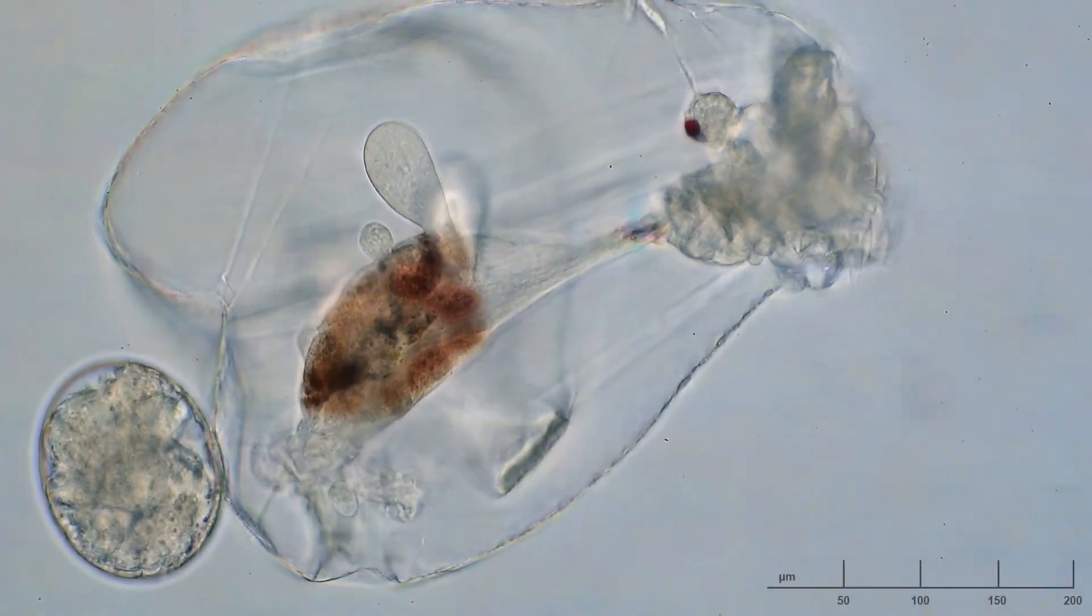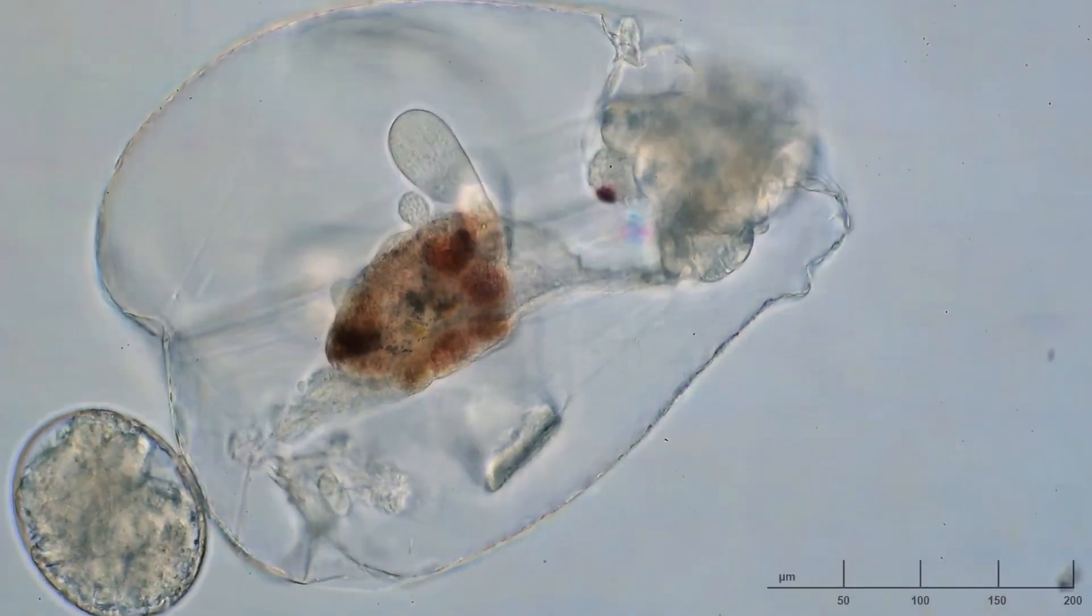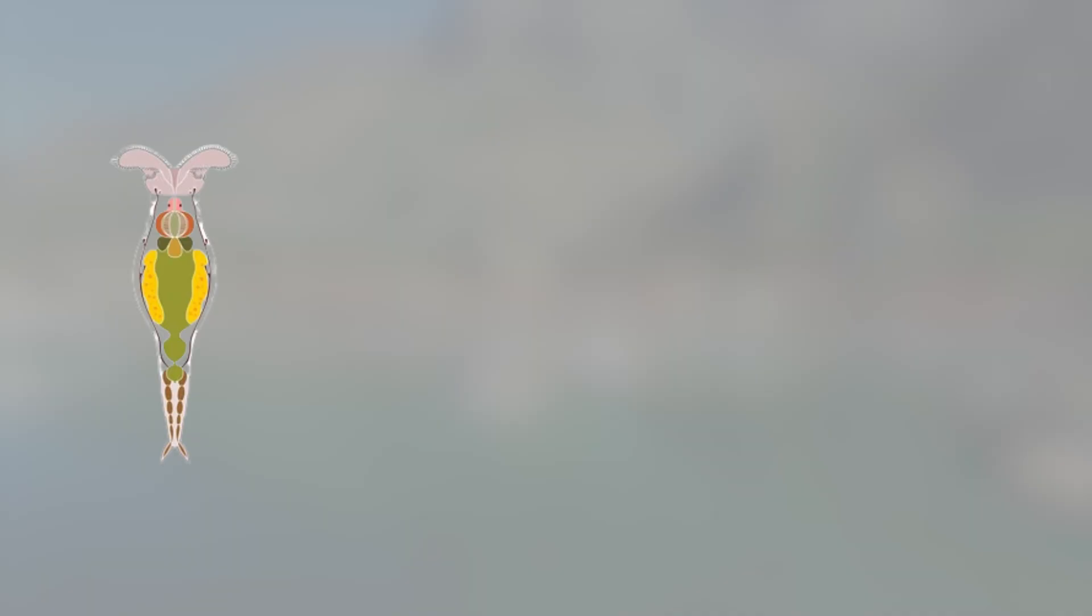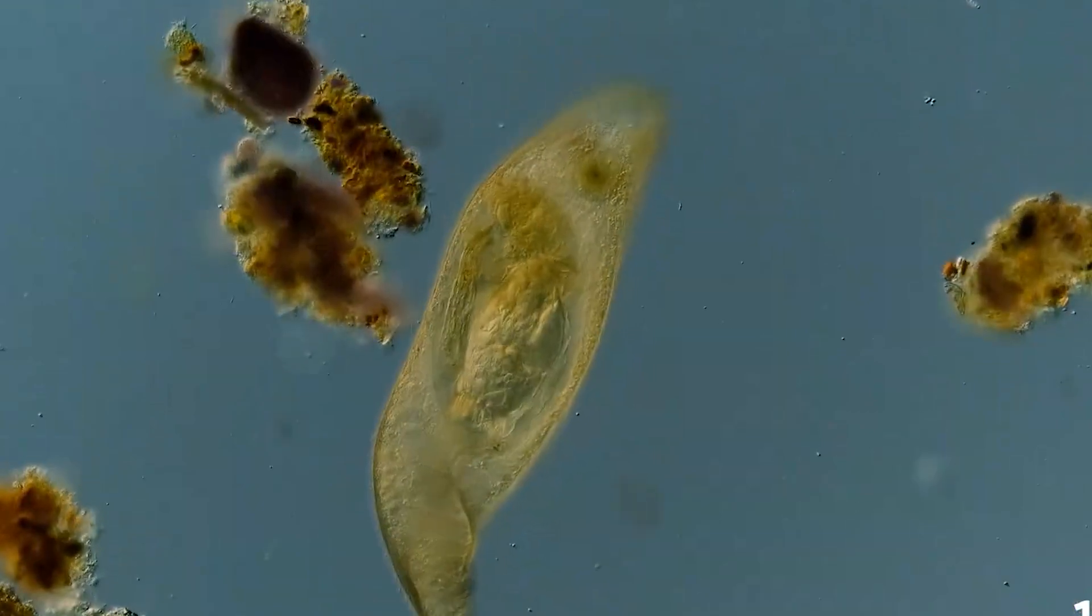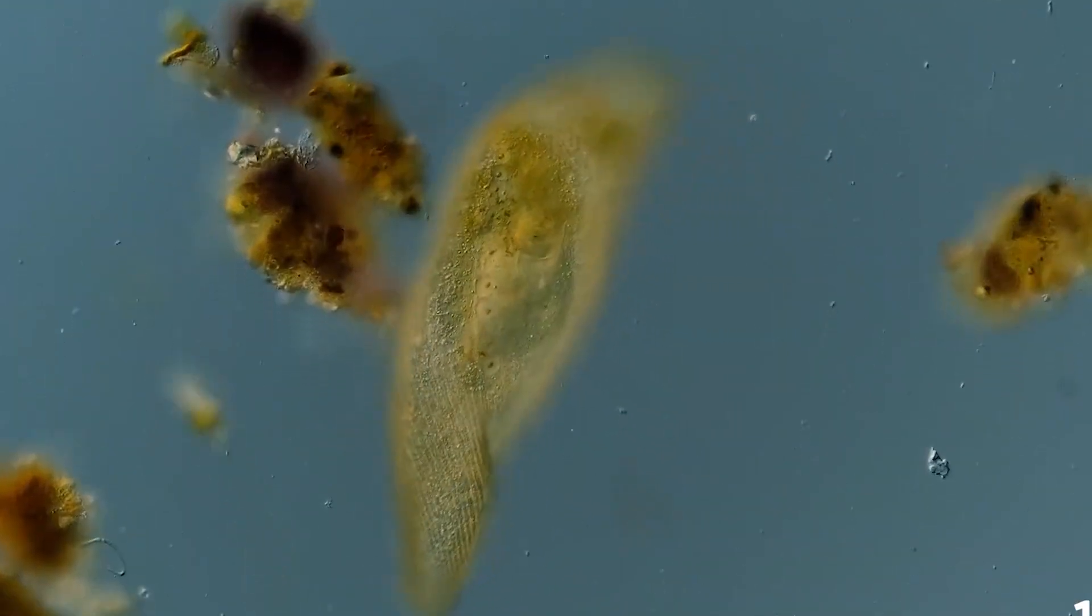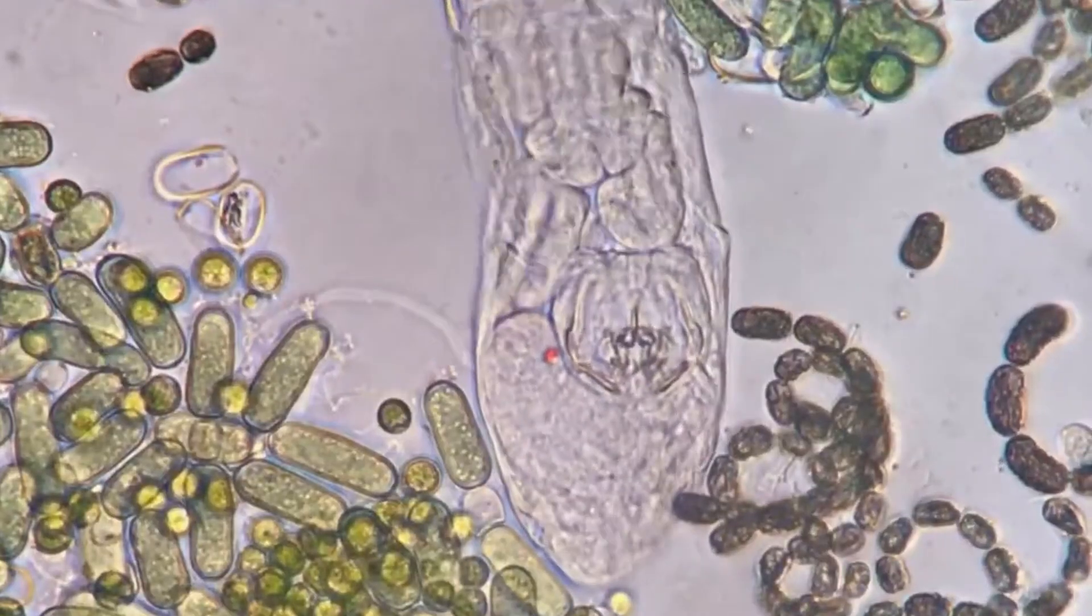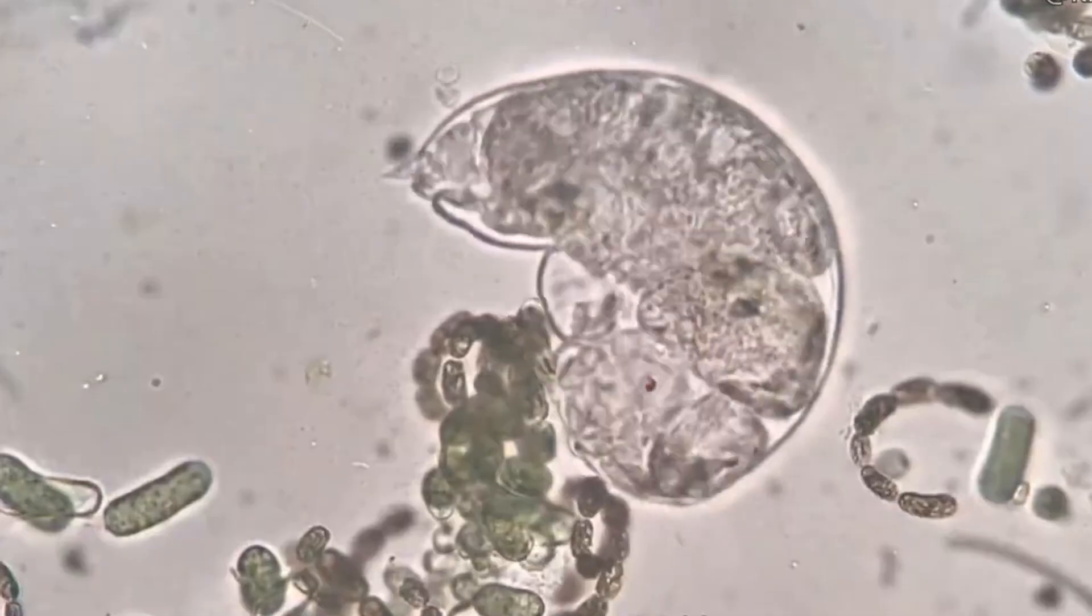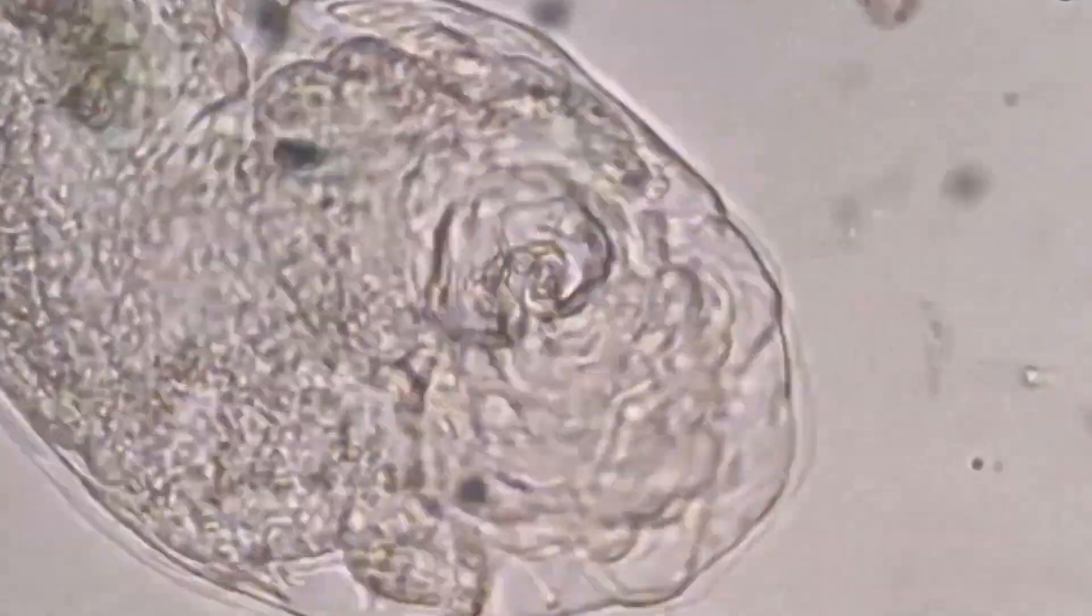The rotifer's survival didn't just defy expectations, it broke biology. Because biologically speaking, it shouldn't have happened. Over thousands of years, DNA is expected to unravel, hit by cosmic rays, radiation, and natural decay. But this rotifer's genetic code didn't just endure, it held its shape like nothing happened. That's why we find ancient remains with fragmented genetic code, not pristine genomes.